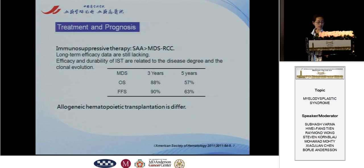The treatment of these patients is also different. Immunosuppressive therapy is useful in these patients, but the five-year MDS overall survival is only 57%, which is less than in severe aplastic anemia patients. Stem cell transplantation is the only way to cure the patients, but in children, the outcome differs between groups.